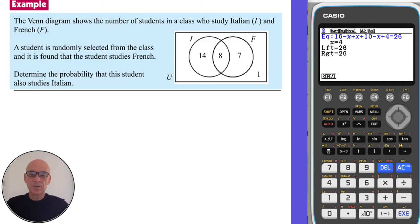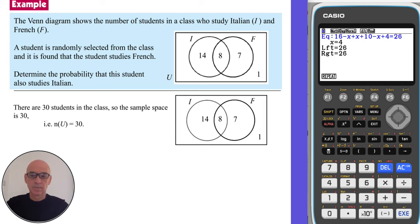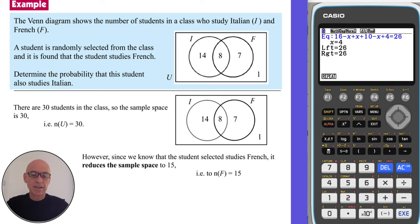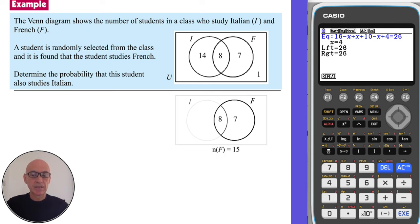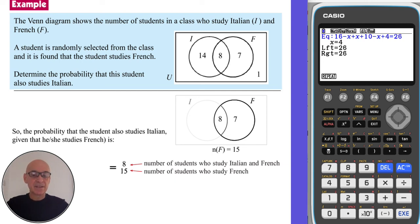In this question, a student is randomly selected from the class and we're told the student does study French. We're asked to find the probability that the student also studies Italian. Adding the numbers in the Venn diagram, there are 30 students in total. However, since we know the selected student studies French, this reduces the sample space to just those studying French — down to 15. Within that reduced sample space, there are 8 students who also study Italian, so the required probability is 8 out of 15.